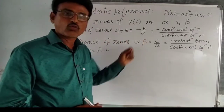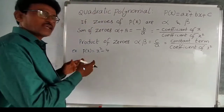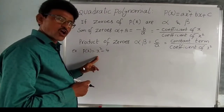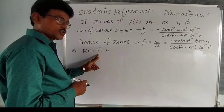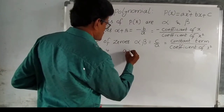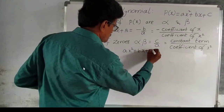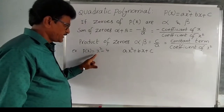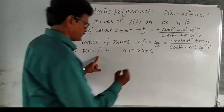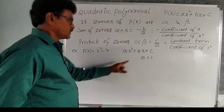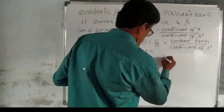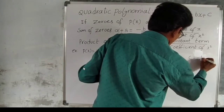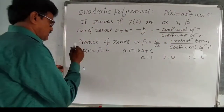Let us take an example: p(x) = x² minus 4. This is a quadratic polynomial. Comparing with ax² + bx + c, we get a = 1, b = 0 (no x term), and c = minus 4. Now let us factorize p(x).